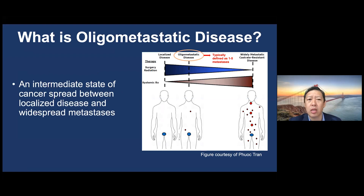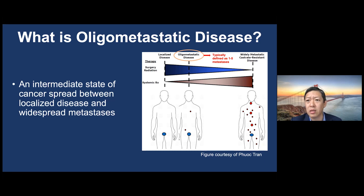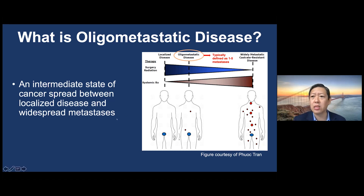What is oligometastatic disease? It's defined as an intermediate state of cancer spread between localized disease and widespread metastasis. There's no magic number, but typically we say it's about one to five metastases. The reason we put so much weight on this definition is that we fundamentally believe some patients with oligometastatic disease are curable — meaning after comprehensive treatment, five or ten years later they have no evidence of disease. That's probably a minority of cases, but it is possible, and that's why we focus on this disease space.